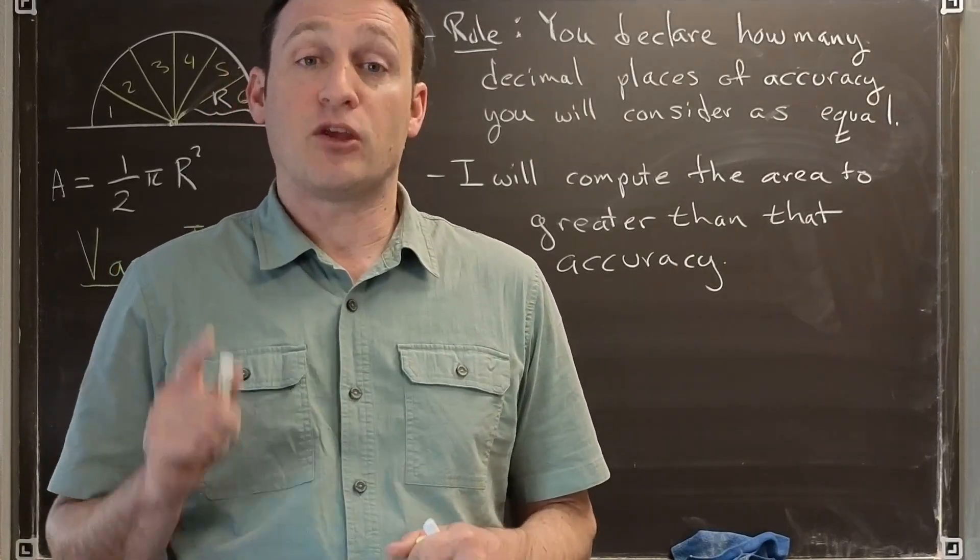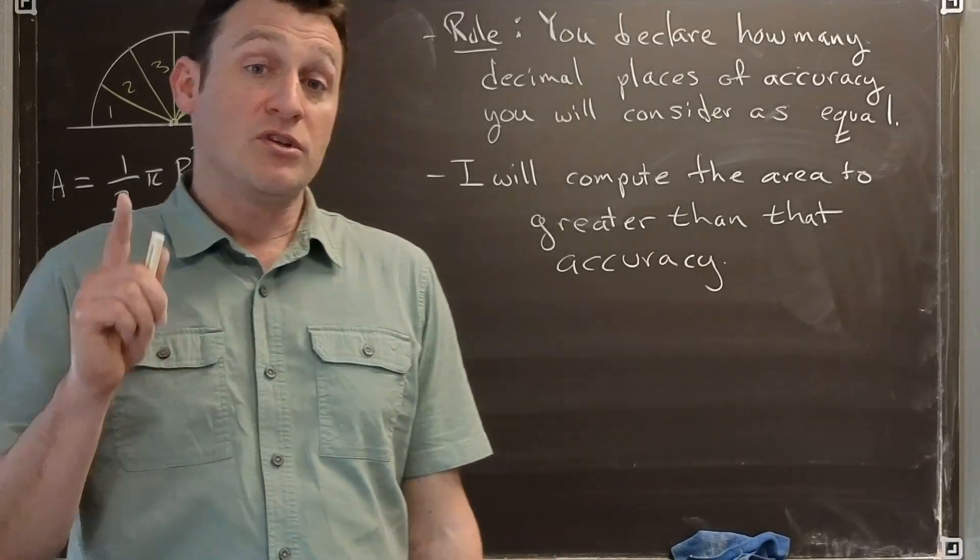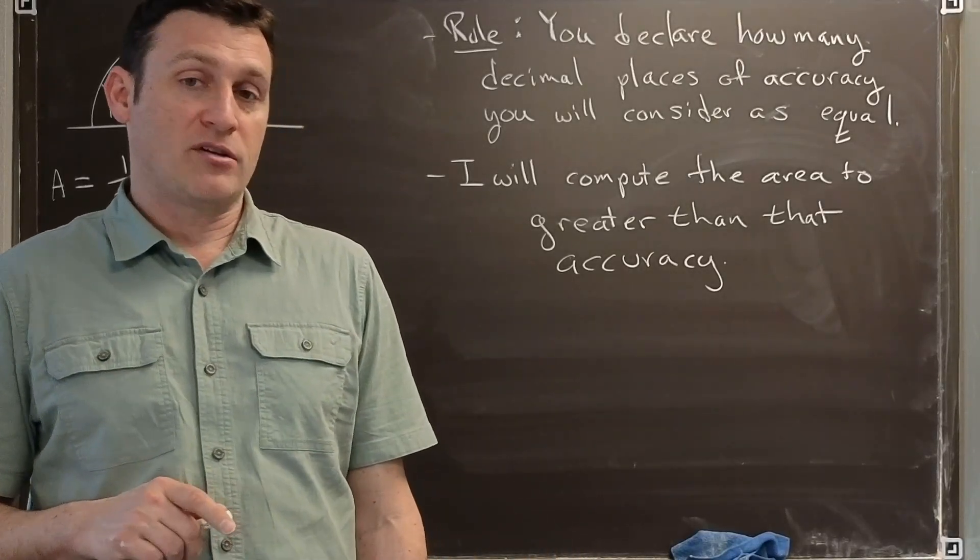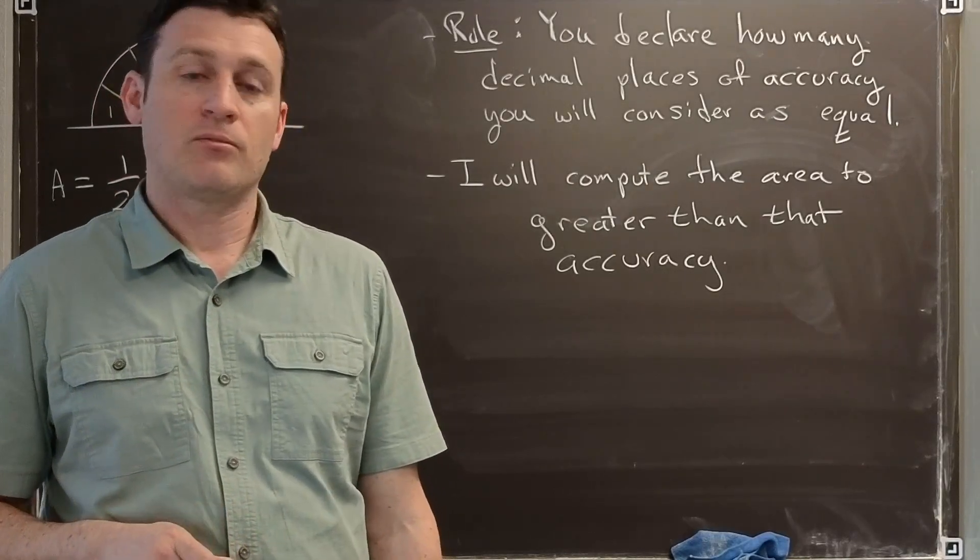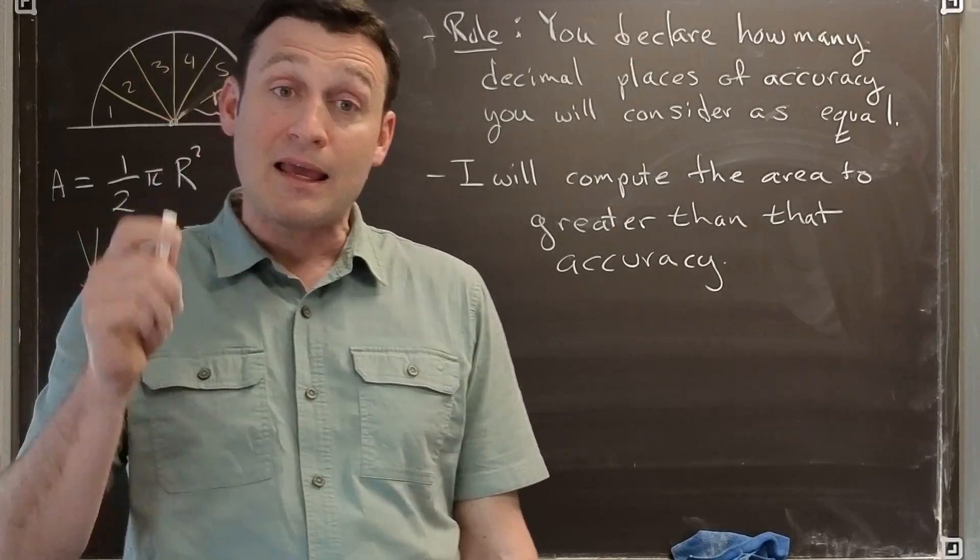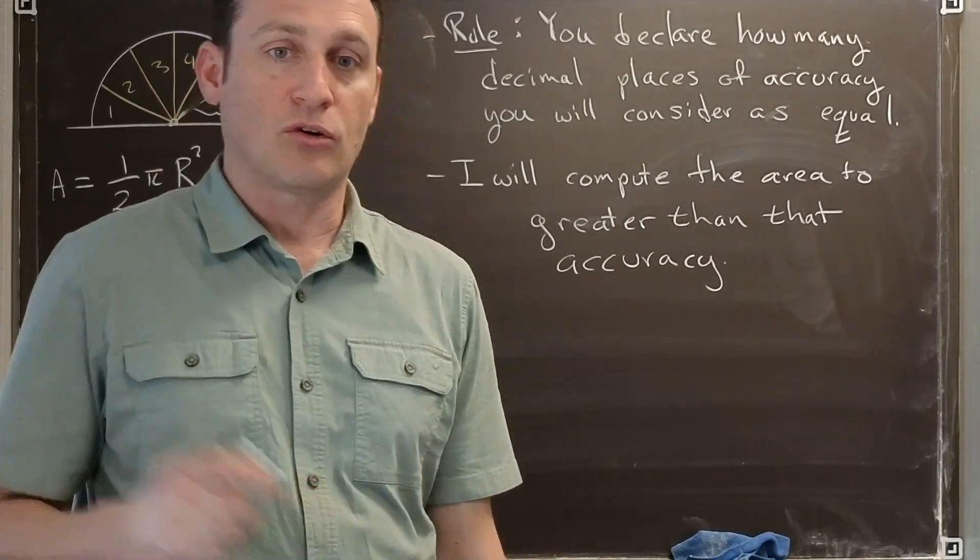The first rule we make is that you must declare the accuracy that you want. Once you tell me how accurate you need the area to be, then my job will be to compute it to better than that accuracy. If we agree to these ground rules, then I can actually answer the area of the circle using this method.